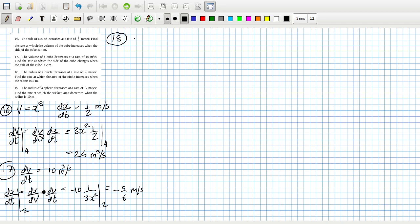18, the radius of the circle increases at the rate of 2 metres per second, so dr dt equals 2 metres per second. Find the rate at which the area of the circle increases, so they want da dt. So that would be da dr times dr dt, and remember a is pi r squared, so da dr is 2 pi r, and dr dt is 2.